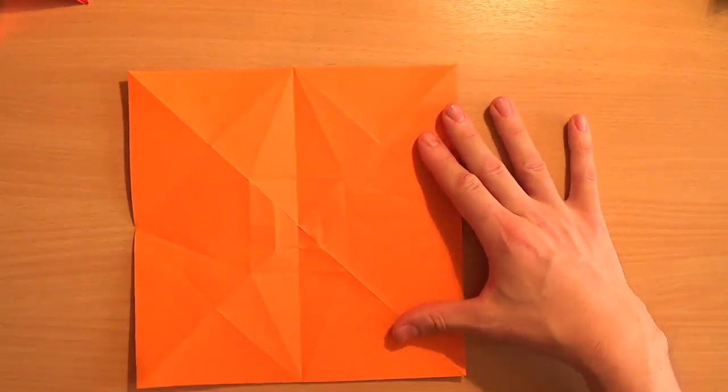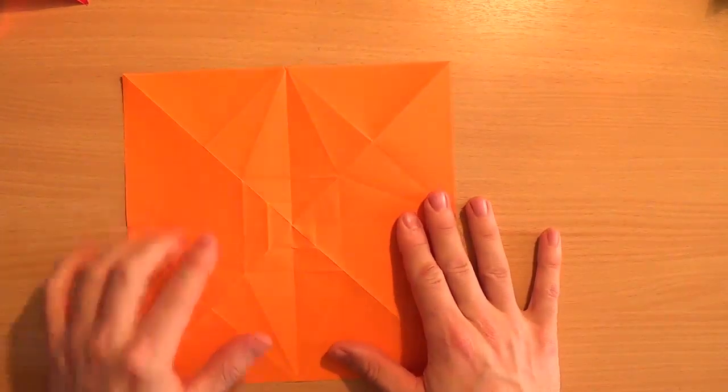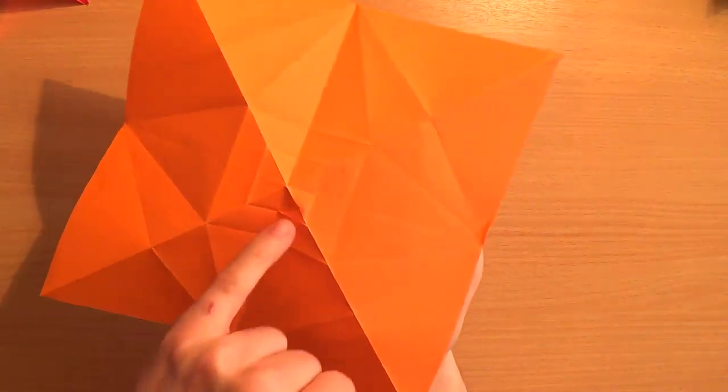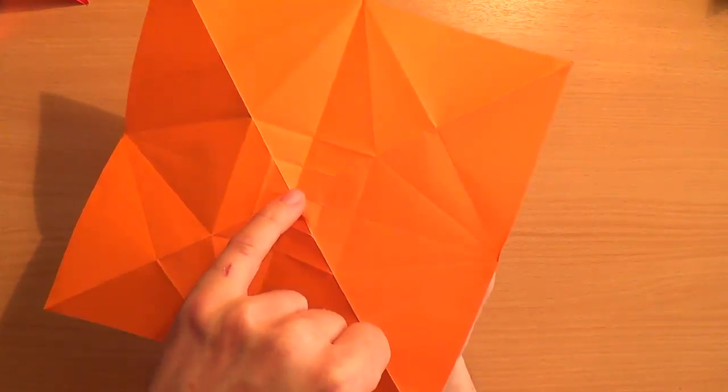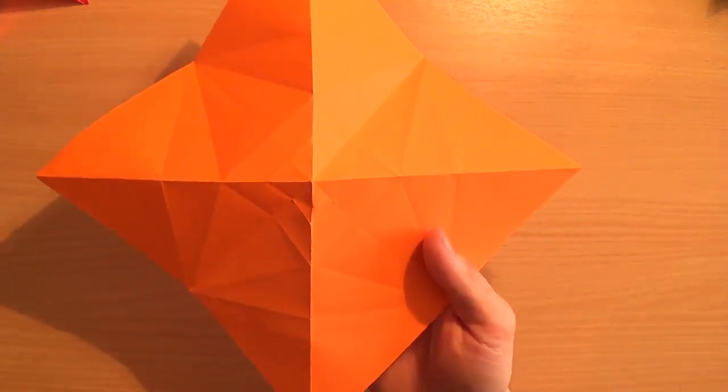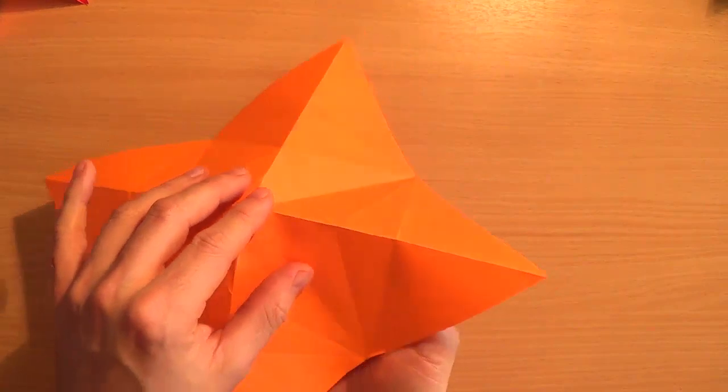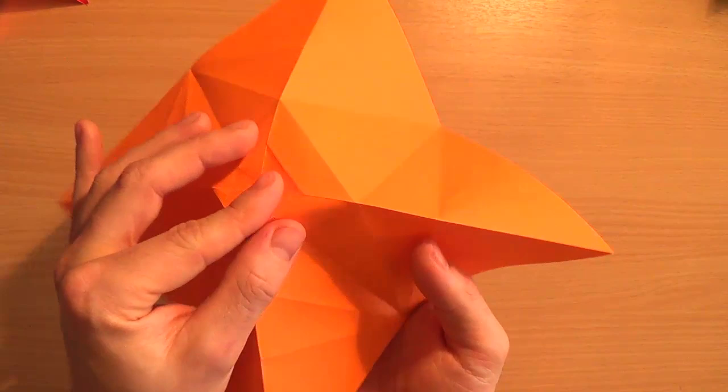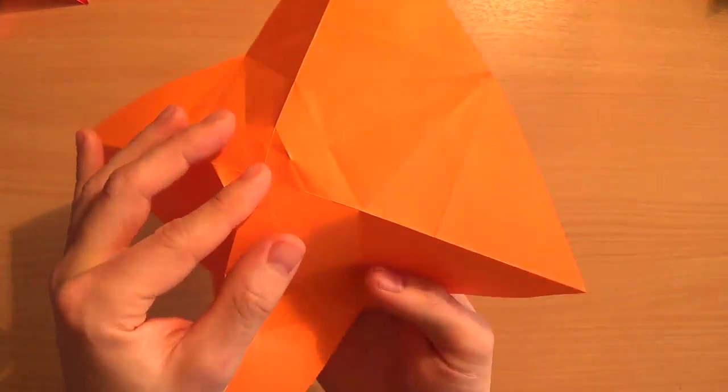Right, and what we've done is we've got all the folds ready to make our module with. This centre square, we've got two squares in the centre, but this centre one is going to go down, whereas the edges are all going to go up. And then we'll put it back into its water bomb base shape.